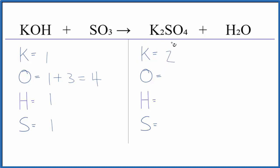Product side, we have two potassium atoms, oxygen four, plus we have the one over here. So we have five, two hydrogen atoms, and one sulfur.